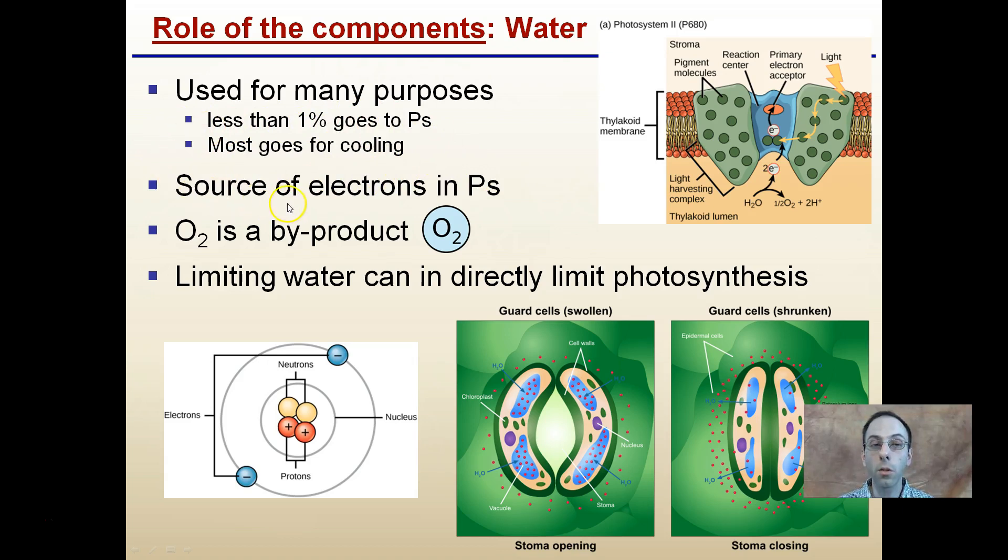Water is also the source of electrons, which as you remember are on the outer shell here. These are valence electrons of our atom. Remember in our nucleus, these are protons and neutrons. Oxygen is a byproduct because we're going to be splitting water, and limiting water can directly limit this photosynthetic process.